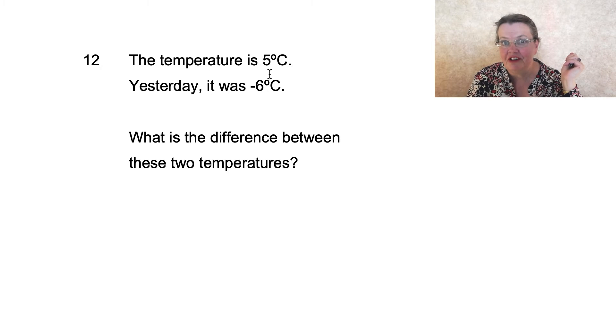The temperature is 5 degrees Celsius. Yesterday it was minus 6 degrees Celsius. Note they're just checking that you can see that minus and you're not reading it as a random dash. What is the difference between these two temperatures?